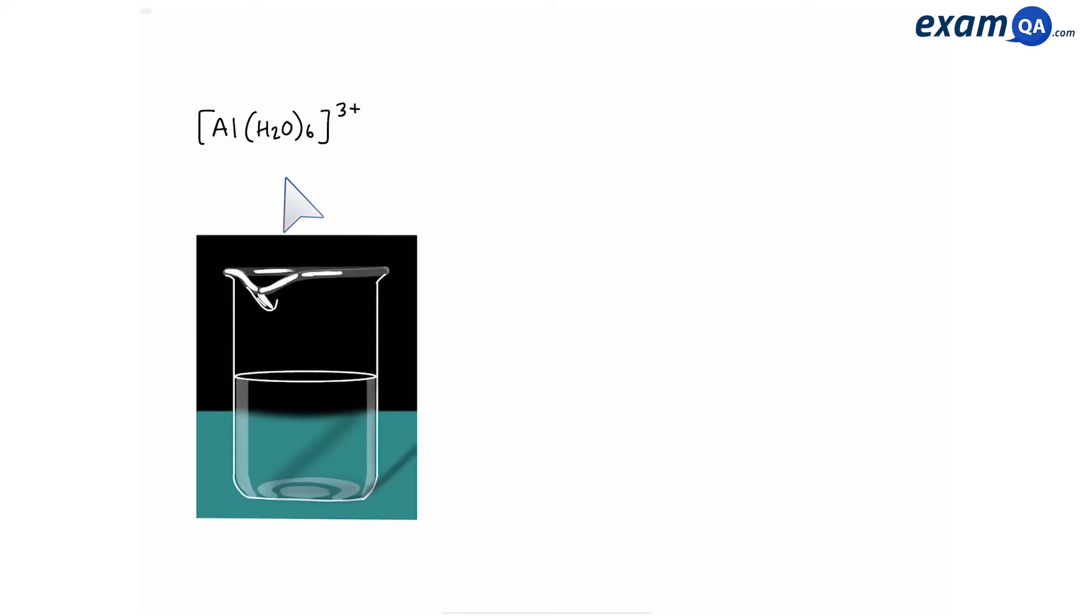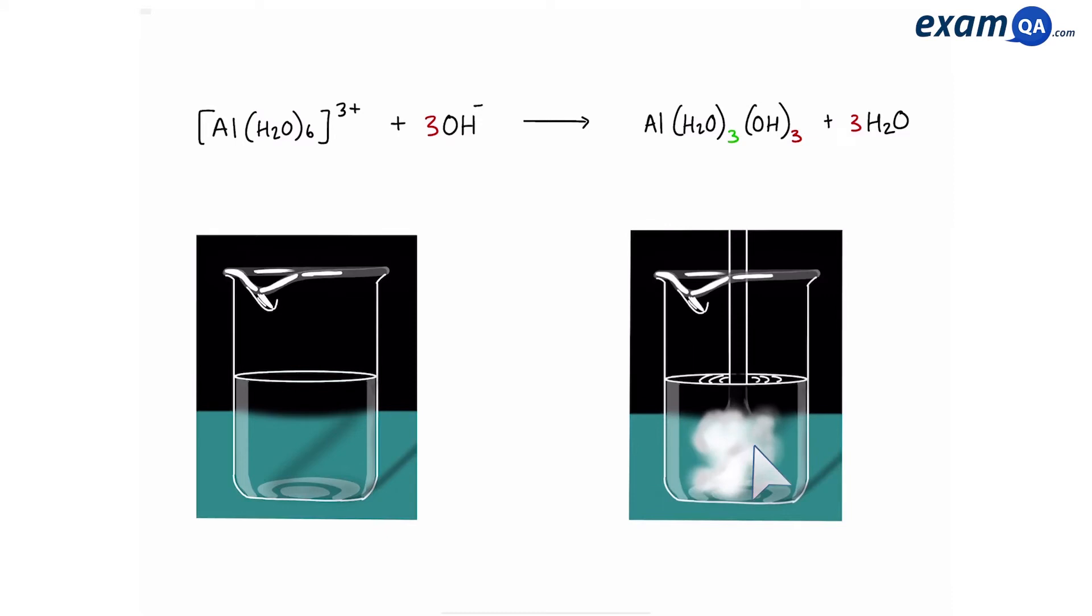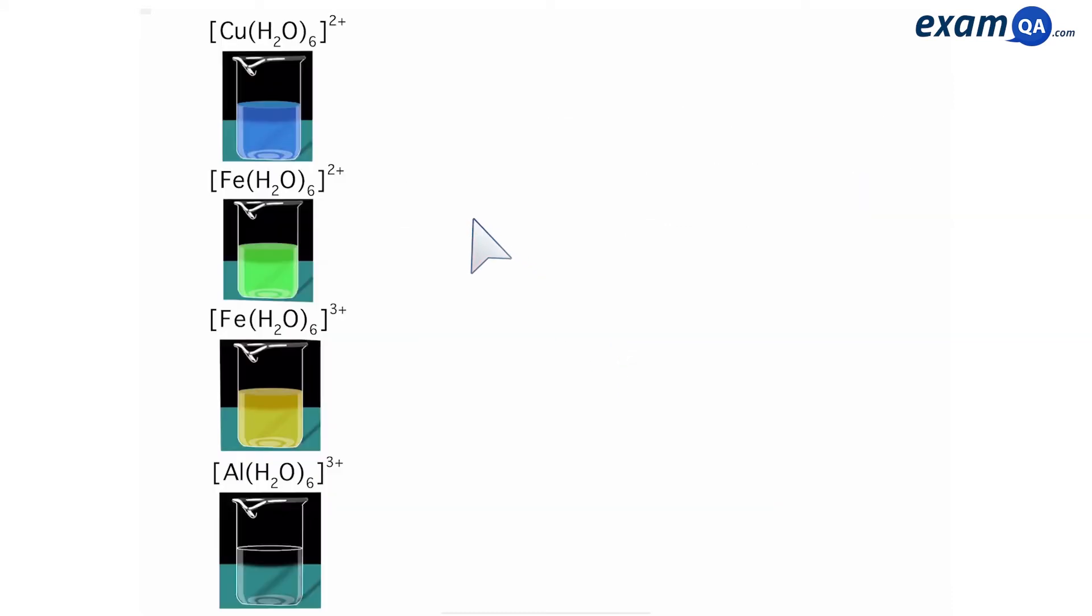Aluminium 3+ is a colorless solution. When it reacts with hydroxide, it forms a white precipitate. And the same precipitate is formed when it reacts with ammonia. So these are the four main hexa-aqua ions that we need to know.